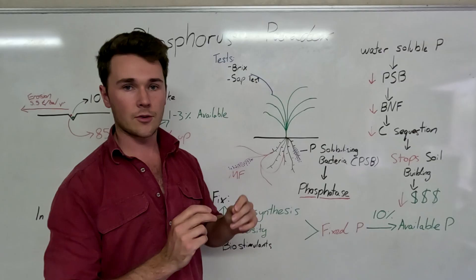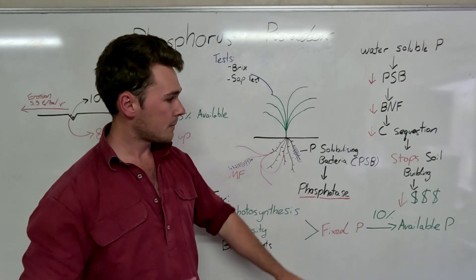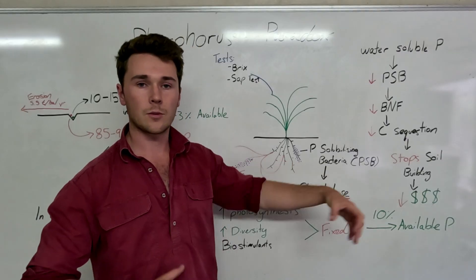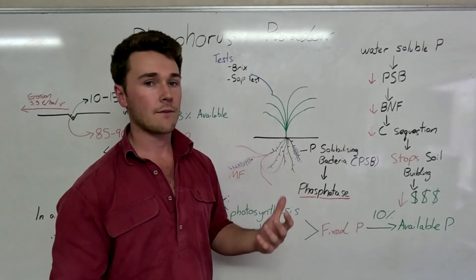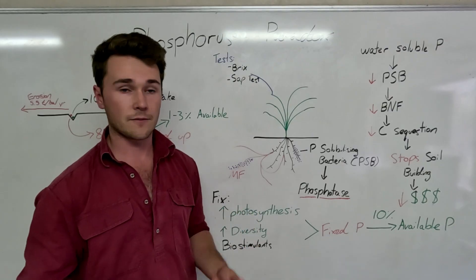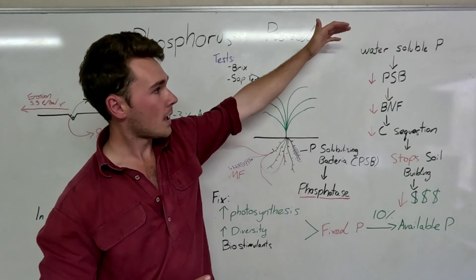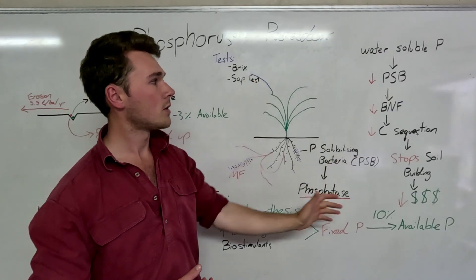And now the reason why Dr. Christine Jones called this whole thing the phosphorus paradox is because once that happens, you think, well, I need to apply more phosphorus for our plants to become sufficient. So you go back here to apply more water soluble phosphorus and the cycle continues.